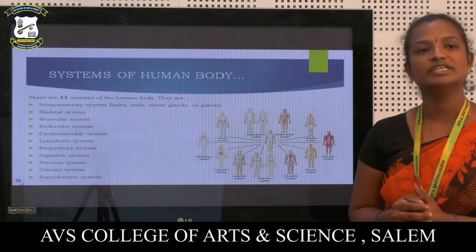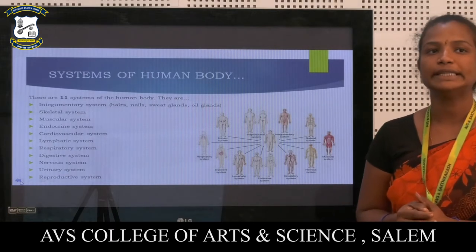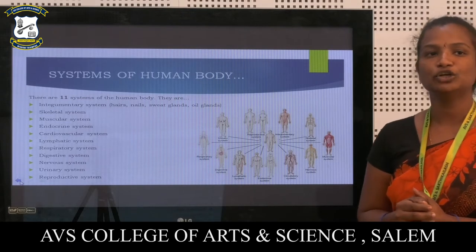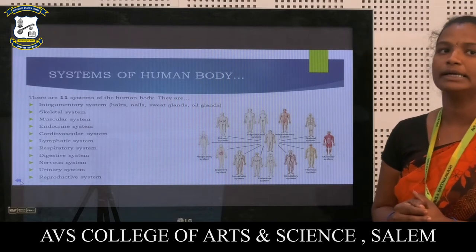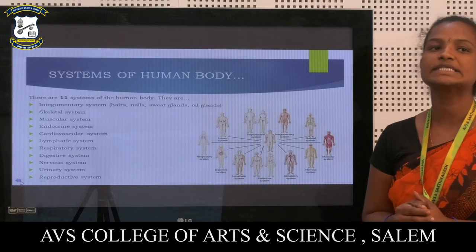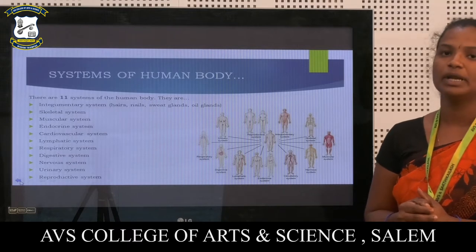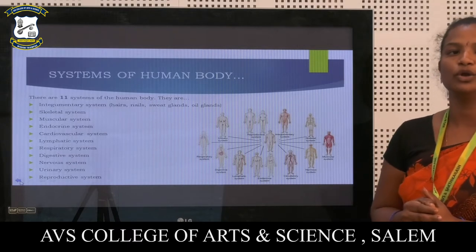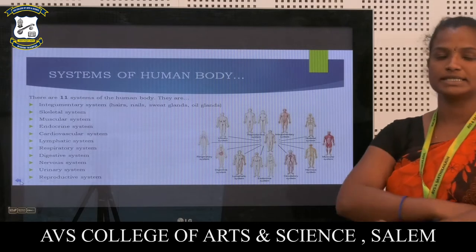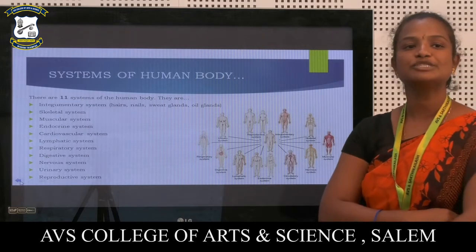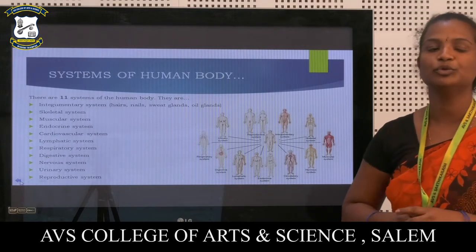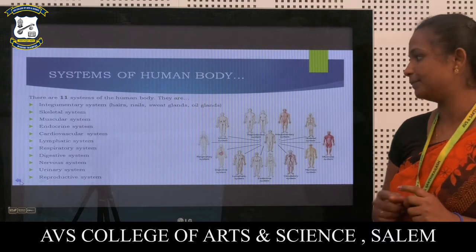There are 7 systems of the human body. They are: the integumentary system, which includes hair, nails, sweat glands and oil glands; the skeletal system; the muscular system; the endocrine system; the cardiovascular system; the lymphatic system; the respiratory system; the digestive system; the nervous system; the urinary system; and the reproductive system.